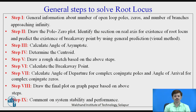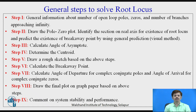General steps to solve root locus problems. Step number one: gather general information about the number of poles, number of zeros, and number of branches which are going to approach infinity. In step number two: draw the pole-zero plot, identify where the root locus exists, and identify by visual method the existence of a breakaway point.